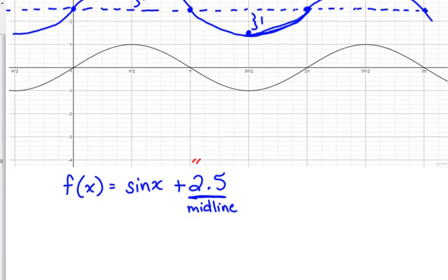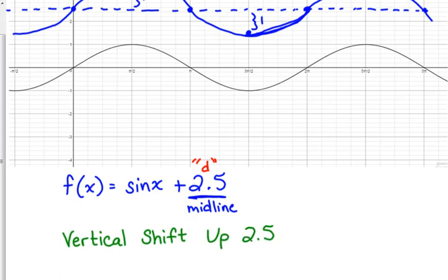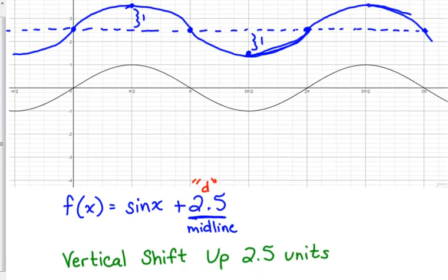2.5 is a vertical shift. This coefficient D is a vertical shift. If it's plus, then it's up. If it's minus, it's down. And it's shifting the midline. We were on the x-axis. Now we're up to happiness.